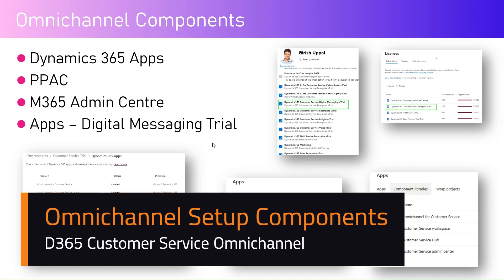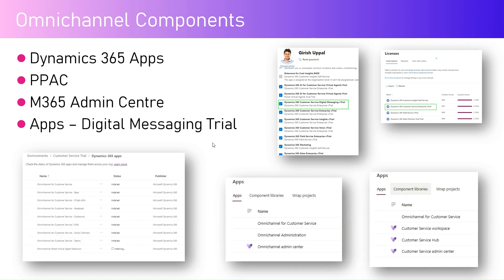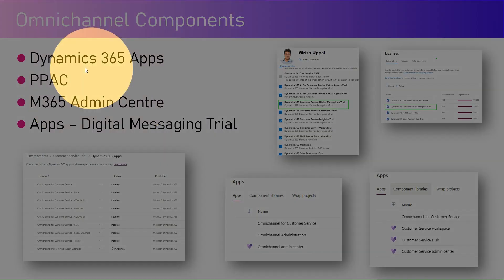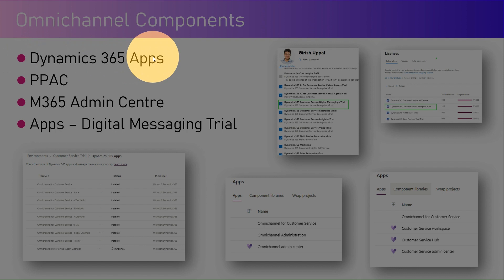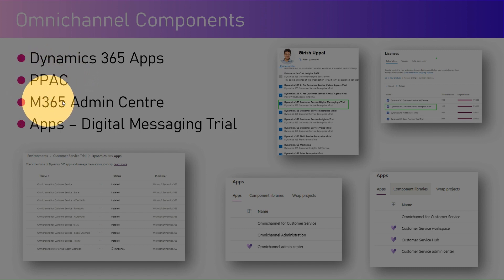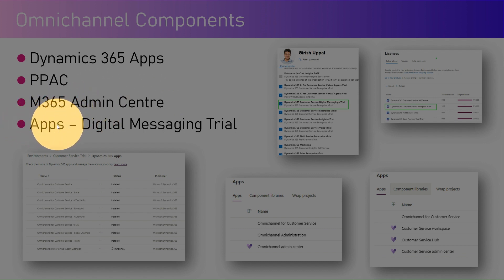In this video I'm going to navigate you through some of the areas within the Power Platform components to view what components get installed once you have Omni Channel installed within your environment. There are multiple areas through which you can navigate: the Apps section within Power Apps, the Power Platform Admin Center (PPAC), the M365 Admin Center for licensing, and apps for digital messaging trials.